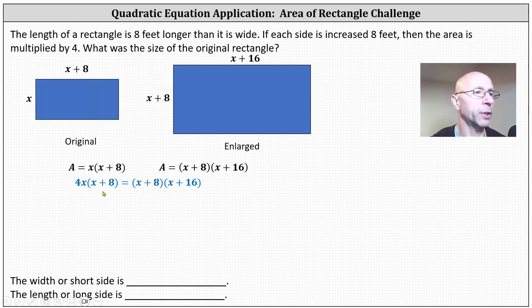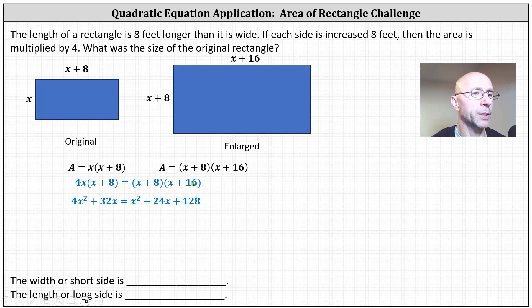For the next step, let's clear the parentheses. On the left, we distribute four x, which gives us four x squared plus 32x. On the right, we multiply the two binomials, which gives us x squared plus 16x plus eight x, which gives us plus 24x, and then plus eight times 16, giving us plus 128.